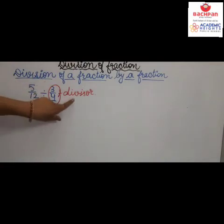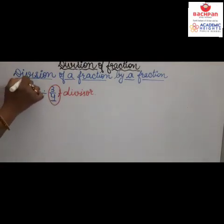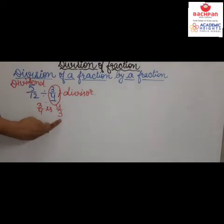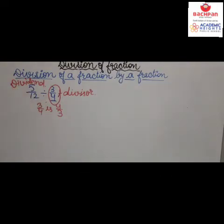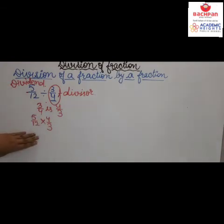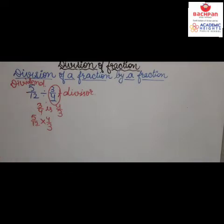Here, 3 upon 4 is the divisor and 5 upon 12 is the dividend. The reciprocal of 3 upon 4 is 4 upon 3. Once we find the reciprocal of the divisor, the division sign is replaced by a multiplication sign.